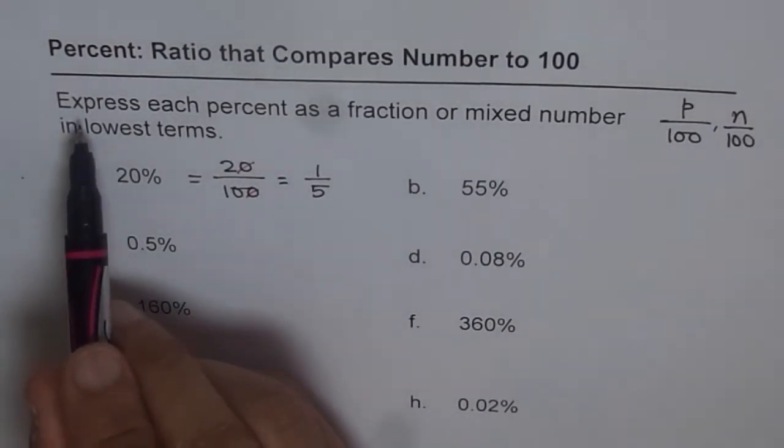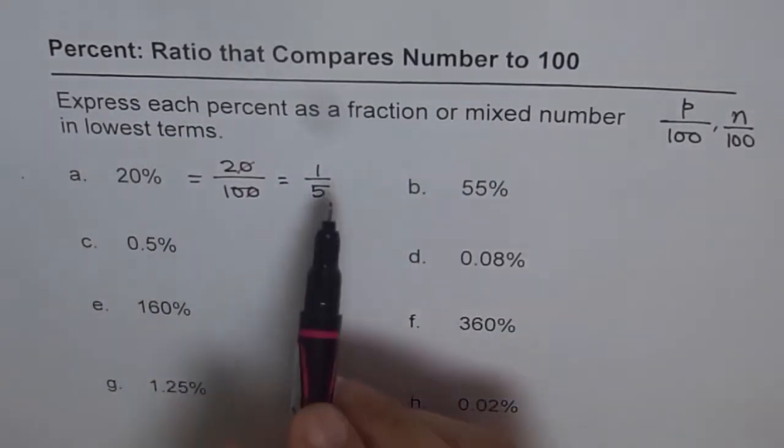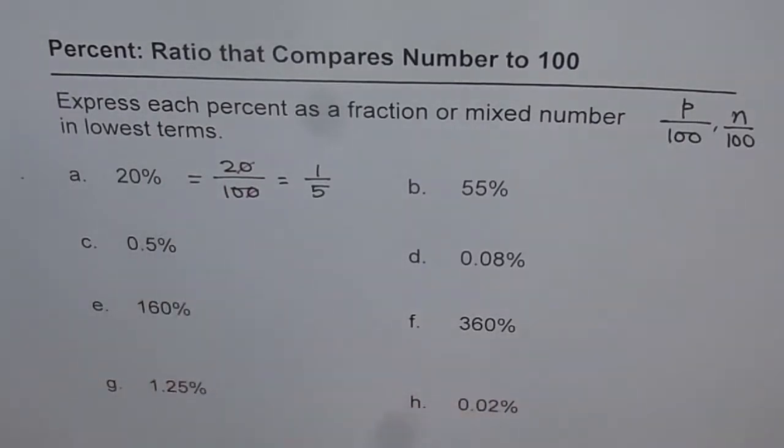So 20% can be written as 20 over 100. That is the first part. And the second part is writing it in a fraction and lowest terms. So that becomes 1 over 5. So both are our answers for this particular question. Since the question is express each percent as a fraction or a mixed number in lowest terms, we are writing in fractions, not in decimals. So when you do this exercise, remember not to use your calculator. Or do not write answers with decimal numbers. Write answers in fractions or mixed numbers as the case may be.